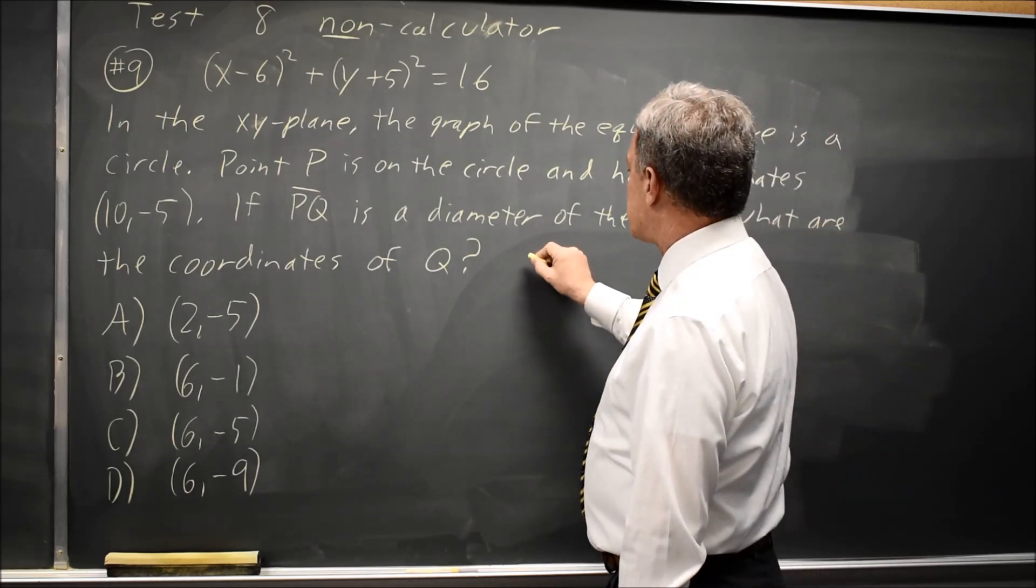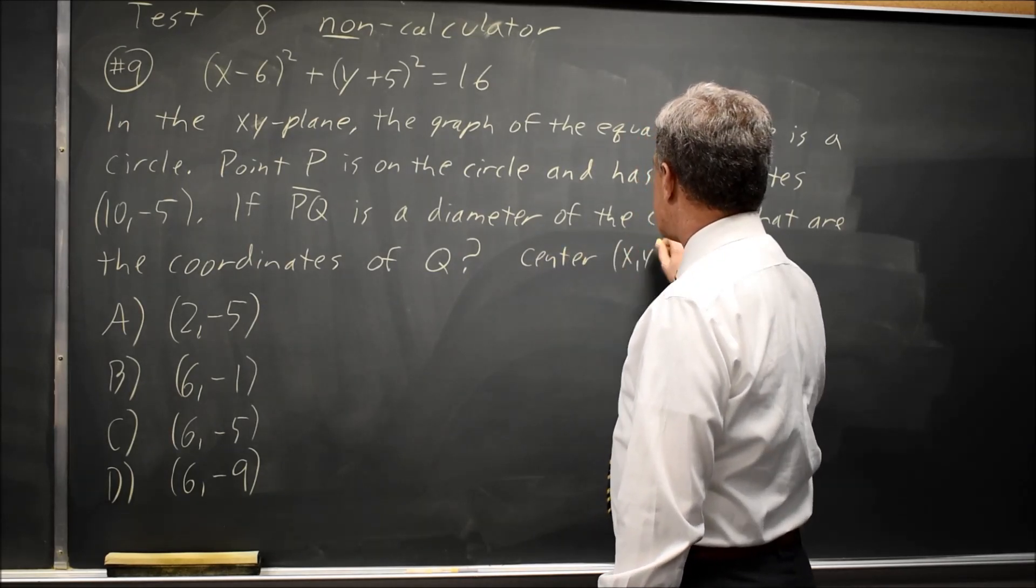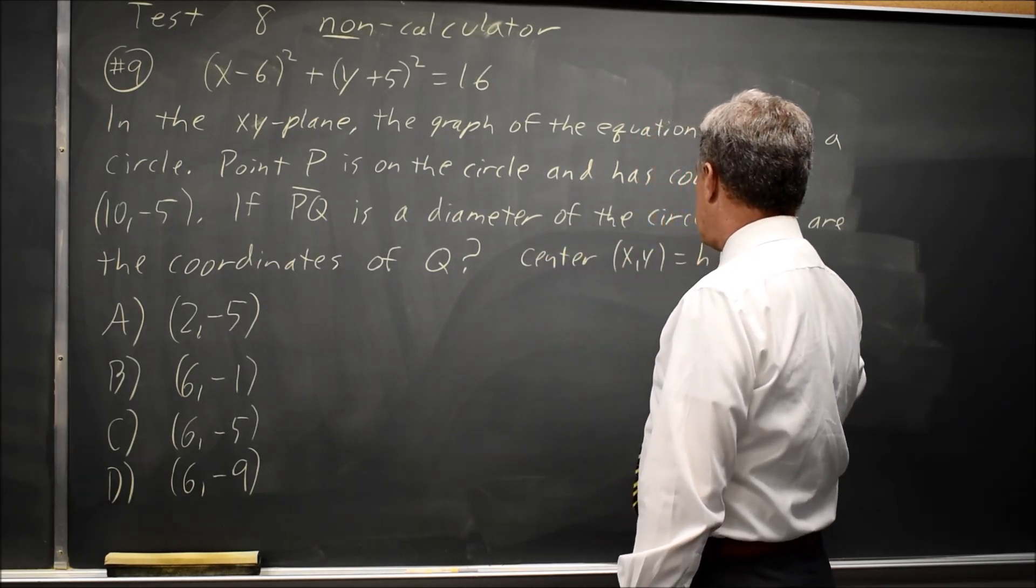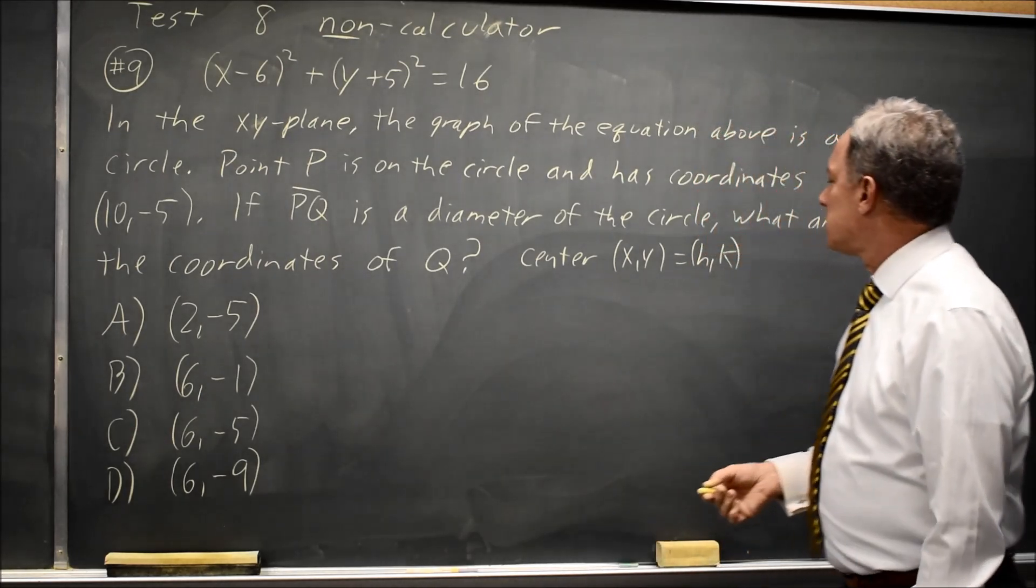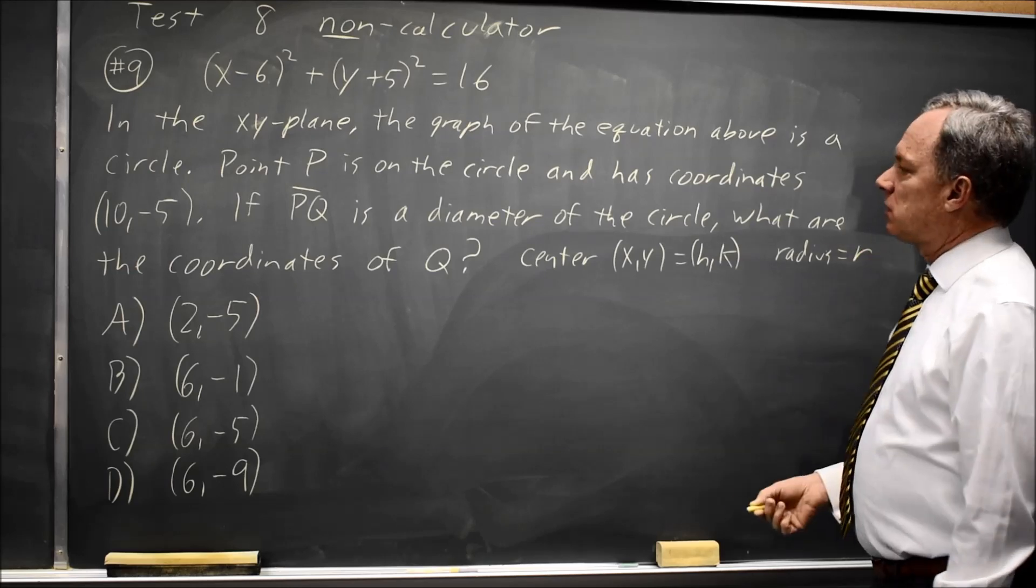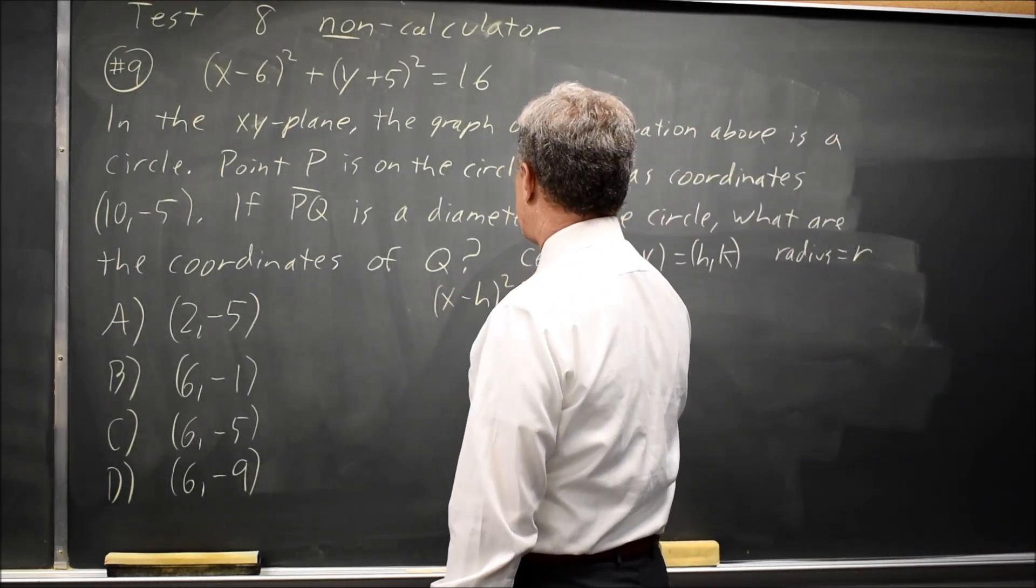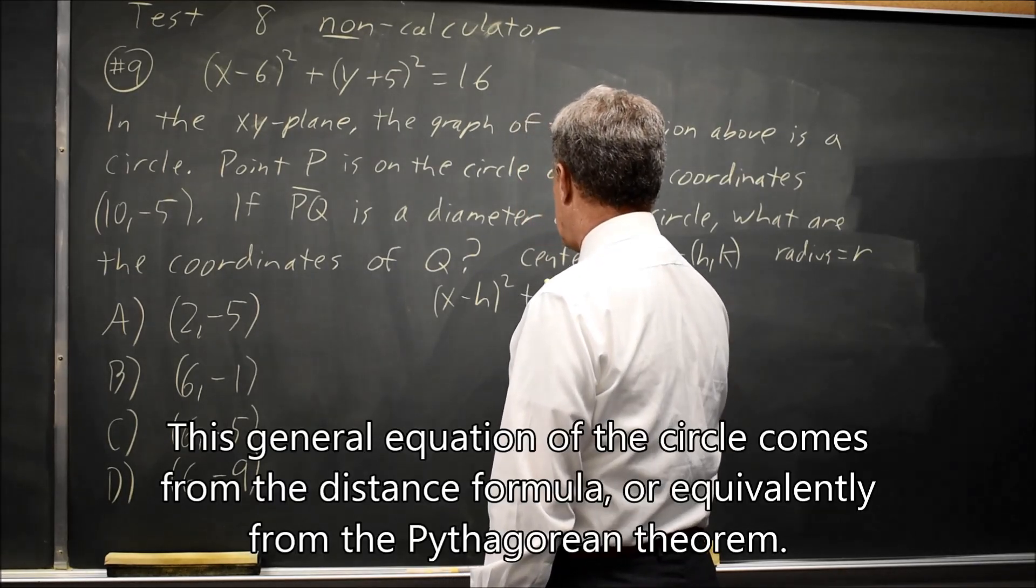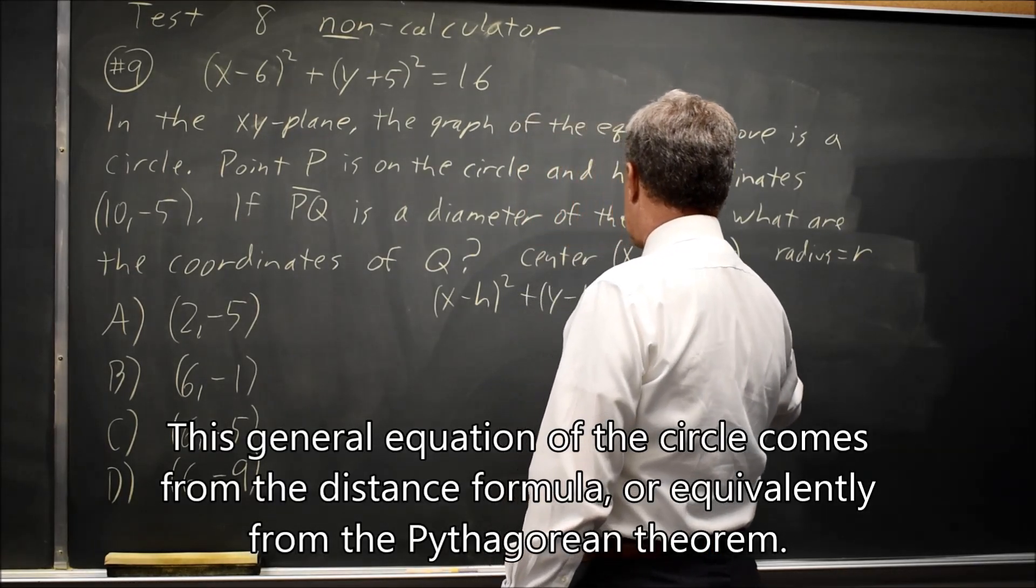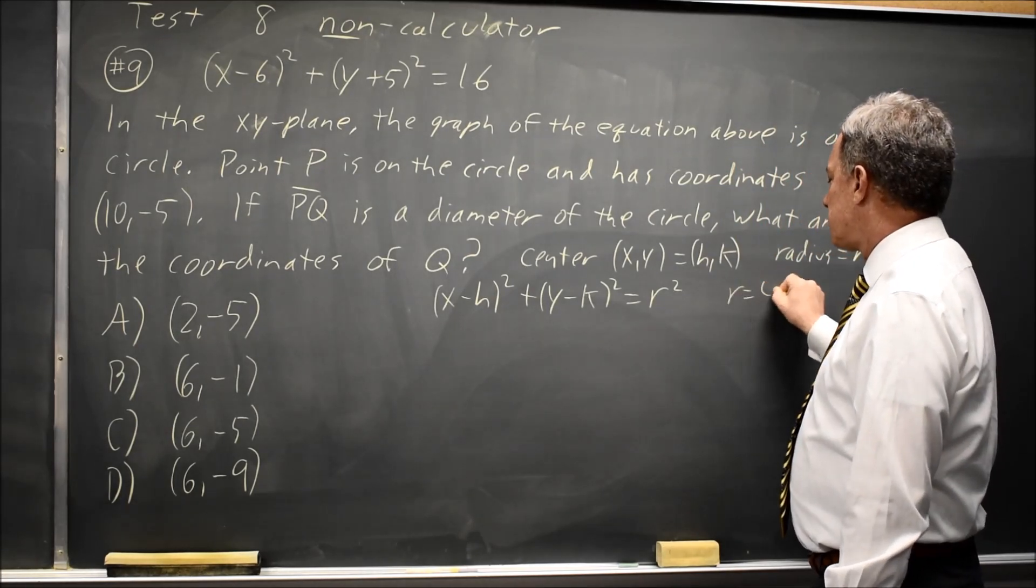I like to remind myself that the center has XY coordinates equal to (H,K). That's standard symbol for the center, and radius equal to R. Our general equation is (X-H)² + (Y-K)² = R², which tells us that since R² equals 16, R equals 4.